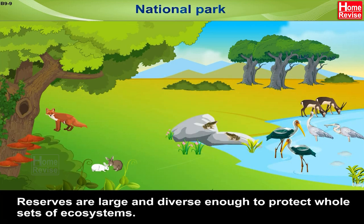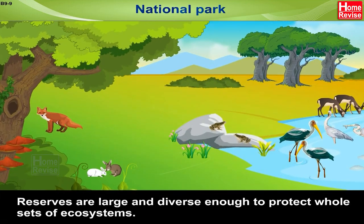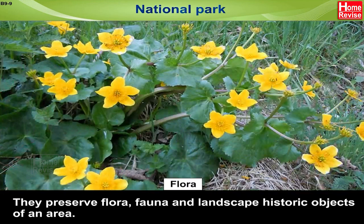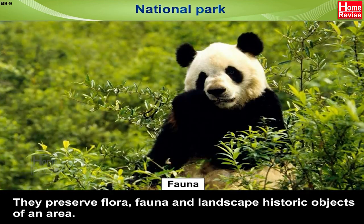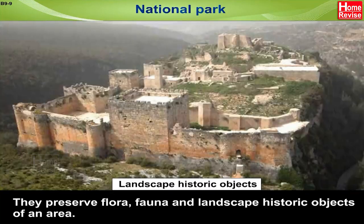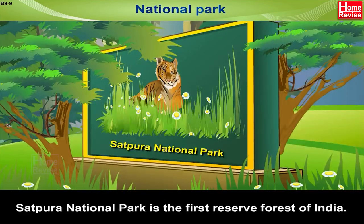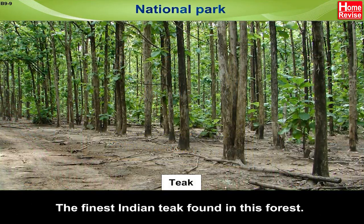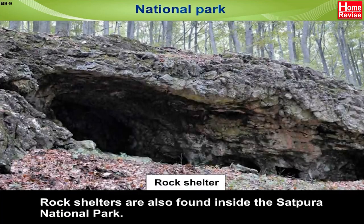National park reserves are large and diverse enough to protect whole sets of ecosystems. They preserve flora, fauna, landscape, and historic objects of an area. Satpura National Park is the first reserve forest of India, and the finest Indian teak is found in this forest.